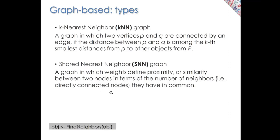The shared nearest neighbor graph, the SNN graph, is similar, but is a graph in which weights define the proximity or similarity between two nodes in terms of the number of neighbors they have in common. So if P and Q have three neighbors in common, then the weight between P and Q would be three. That's the idea of the SNN graph.